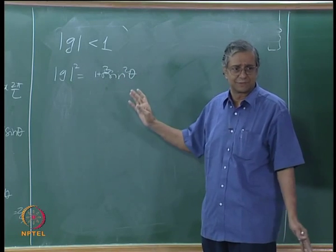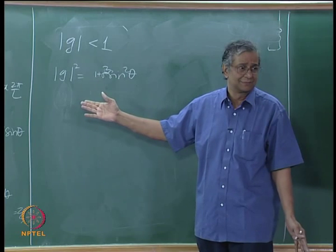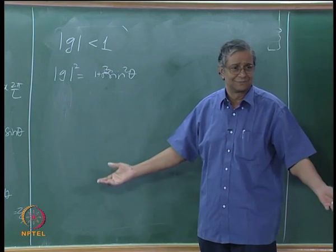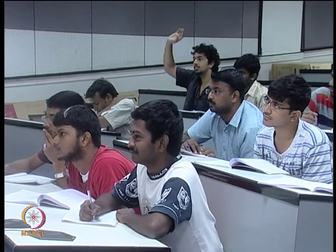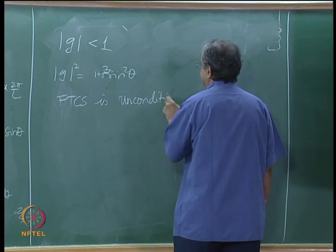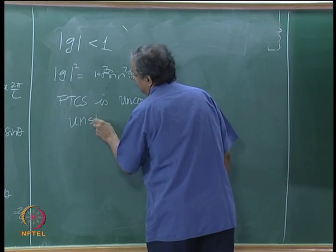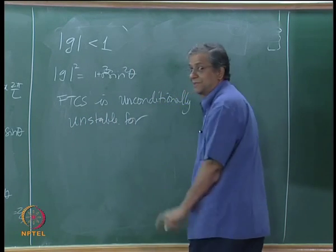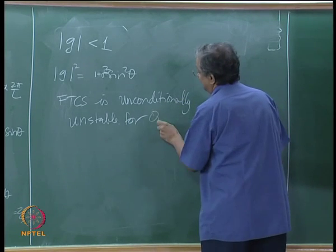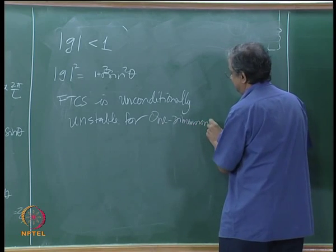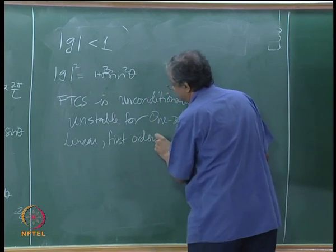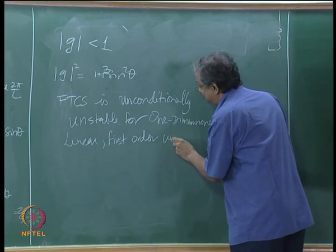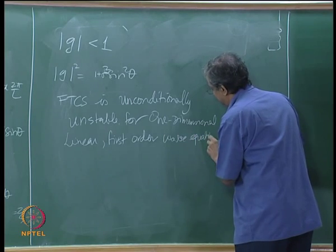So FTCS — Forward Time Central Space — is unconditionally unstable when applied to the 1-dimensional linear first-order wave equation.